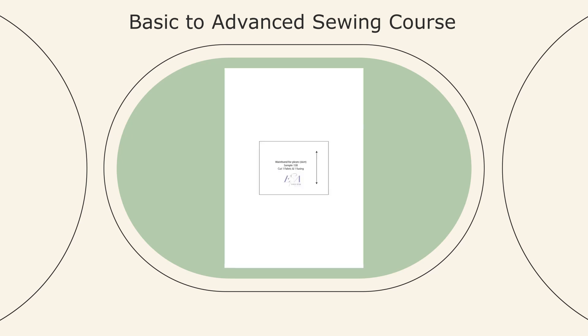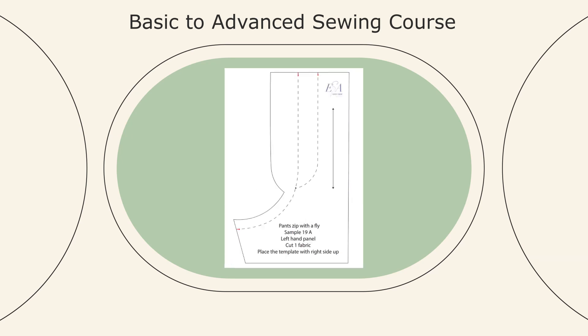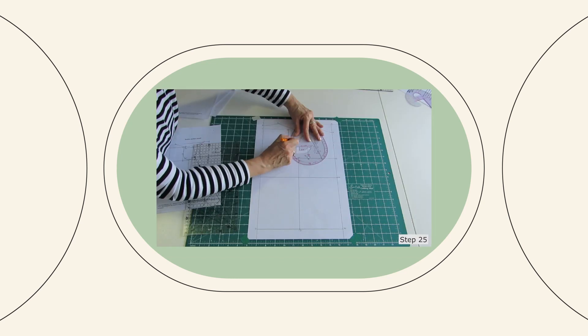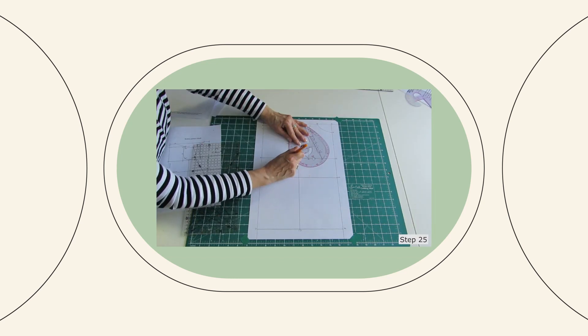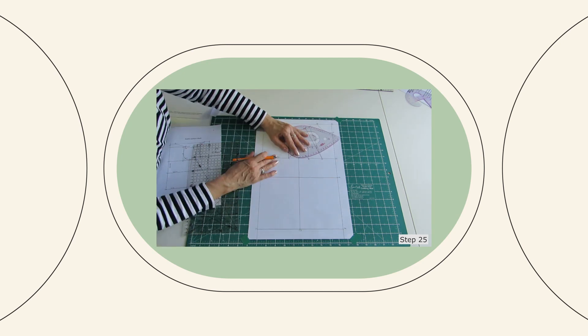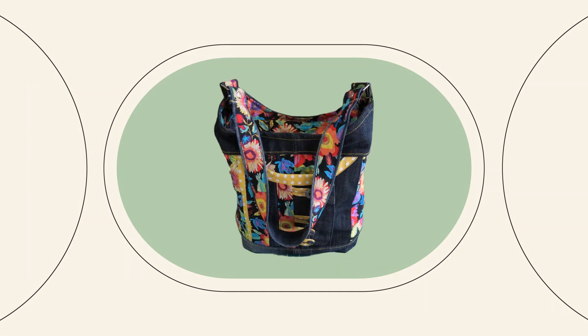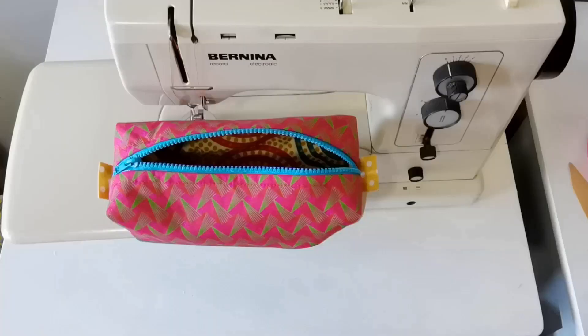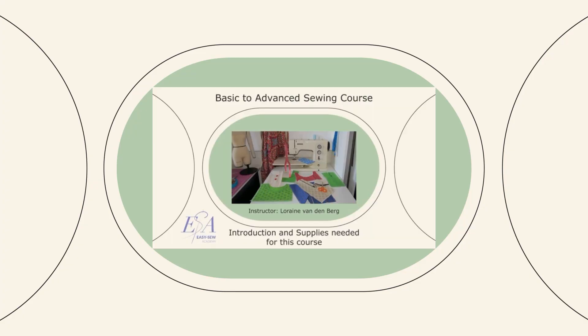For most of the samples, you will receive a template on PDF which will be listed below the specific video. After finishing the sewing course, you may start with the pattern making course or any of the project courses that are available on the membership. To start your course, scroll to video number 1 which will be the introduction and supplies needed for this course.